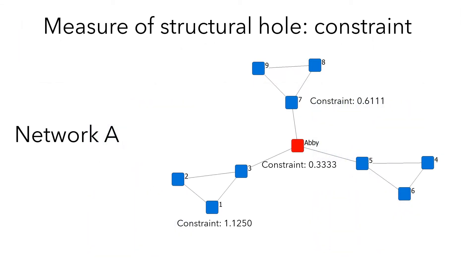There are many measures of structural holes, including bridge counts, effective size, and constraint. Here we focus on a commonly used one: constraint. Constraint is a node-level metric that measures the extent to which a node is constrained in a single cluster. You can calculate the constraint measure in UCINet. In network A, Abby has the lowest value of constraint — 0.3333 — meaning Abby is the least constrained node in the network.